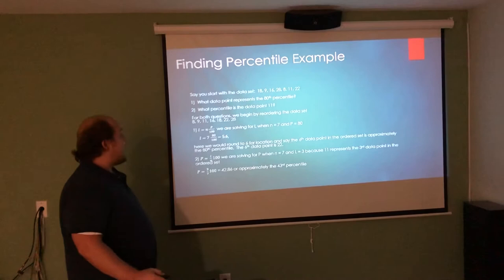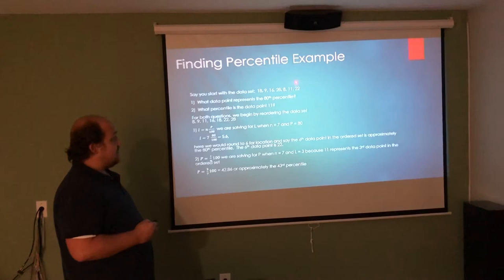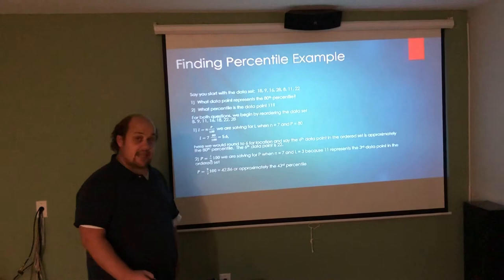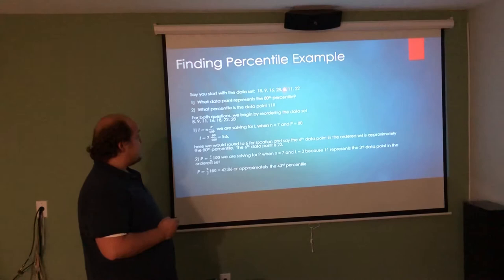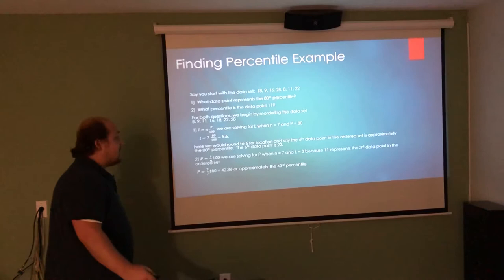So if I was asked, let's say I have the data set 18, 9, 16, 28, 8, 11, 22. Now I want to find what data point represents the 80th percentile within this data set, and then I want to find what percentile the data point 11 is. The very first thing I always have to do is order this from least to greatest. So I see the smallest number is 8, then 9, then 11, 16, 18, 22, 28.